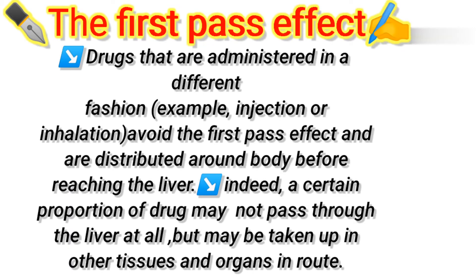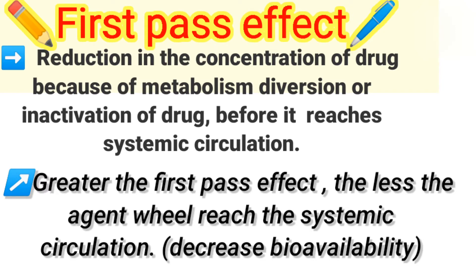Drugs administered by different routes — for example through injection or inhalation — get directly into the bloodstream and avoid the first pass effect. They are distributed around the body before reaching the liver. In certain cases, a proportion of the drug may not pass through the liver at all but may be taken up in other tissues or organs along the way.